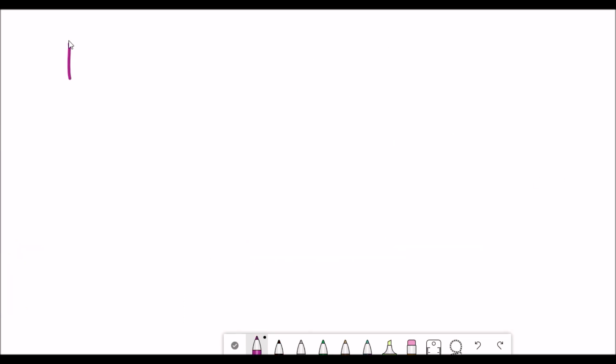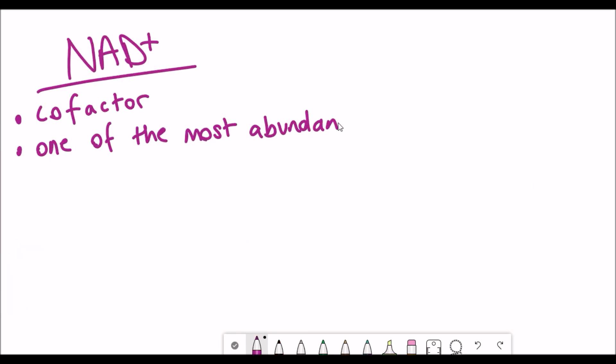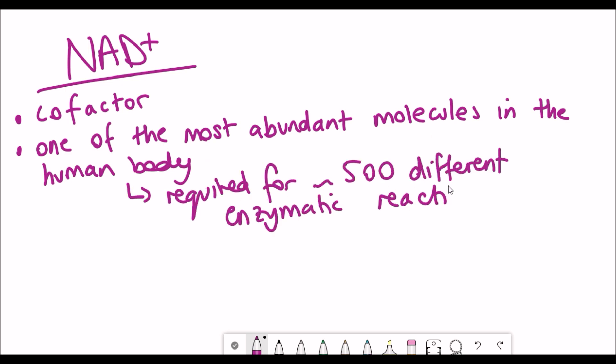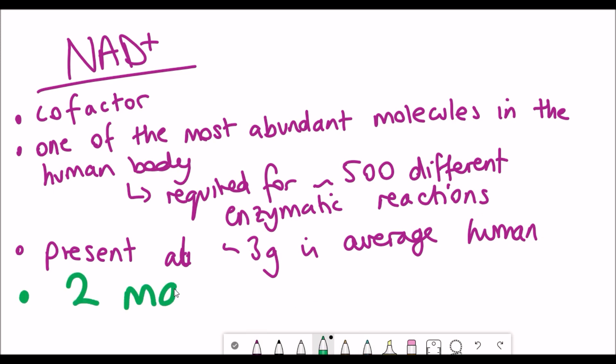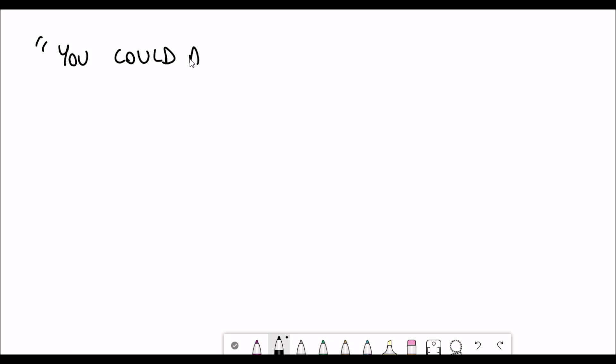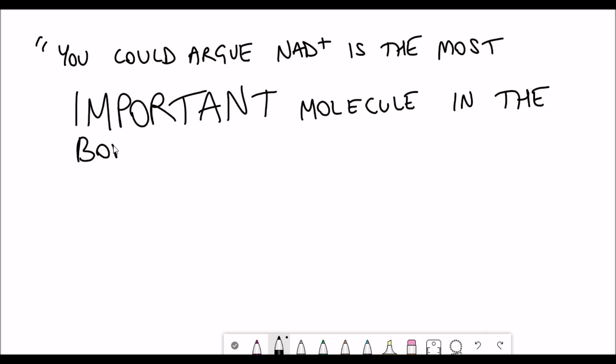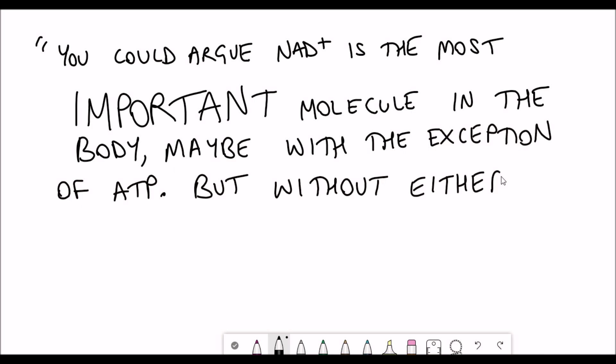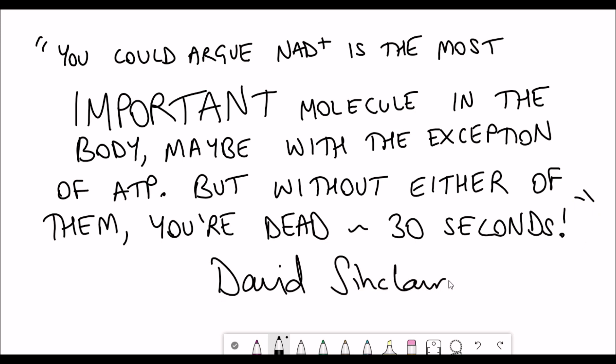I've spoken about NAD+ quite a few times now on this channel, but just to reiterate, NAD+ is a cofactor and one of the most abundant molecules in the human body. There are two main functions that NAD+ has: firstly, as a redox coenzyme, and secondly, as a substrate of NAD+ consuming enzymes. You could argue that NAD+ is the most important molecule in the body, maybe with the exception of ATP, but without either of them, you're dead within around 30 seconds.